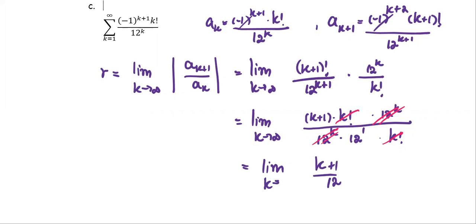As k approaches infinity, the value of the limit approaches infinity. Since r equals infinity, which is larger than 1, we can say the series diverges by the ratio test.